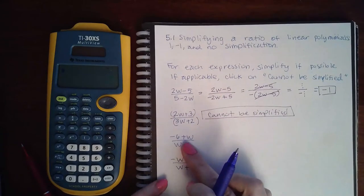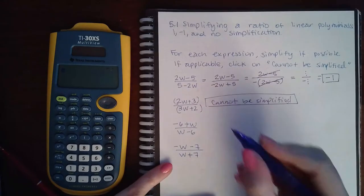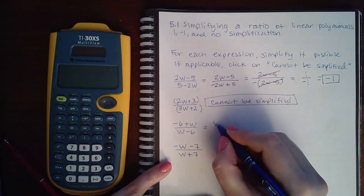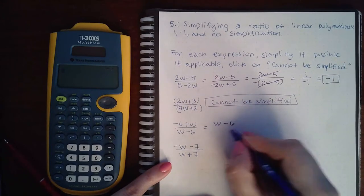For this one, the top needs to be written in the correct order. If I write positive w in the front and negative 6 in the back,